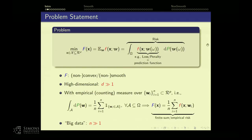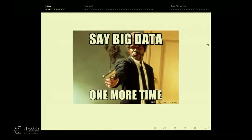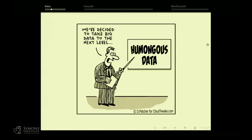An important aspect is the data — the big data regime, if you're solving empirical risk minimization, you most likely have a large n. This is in quotation marks because people are starting to hate using this term. So I promise this is the last time you hear me say 'big data' — I'm going to use 'humongous data' instead.